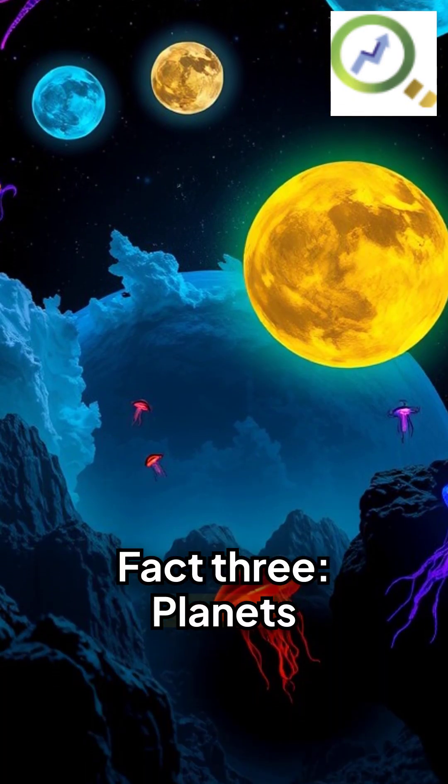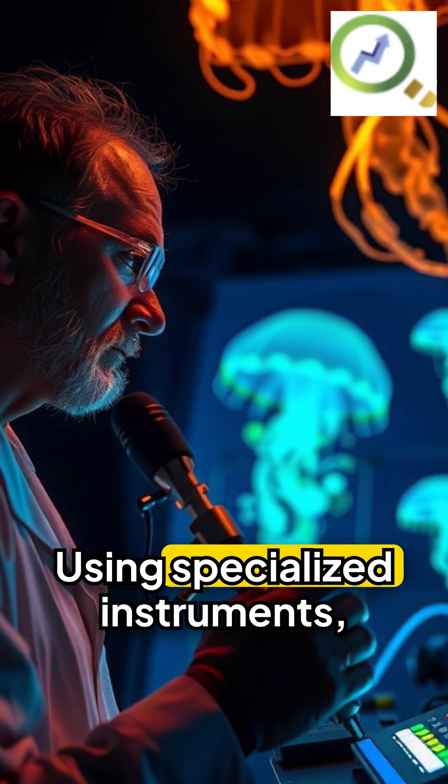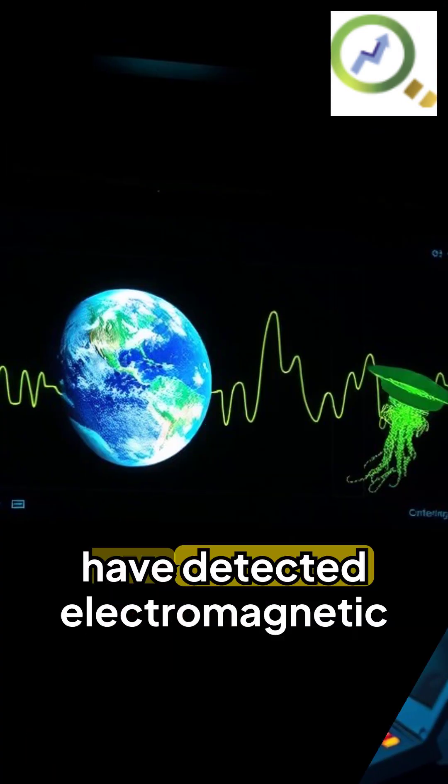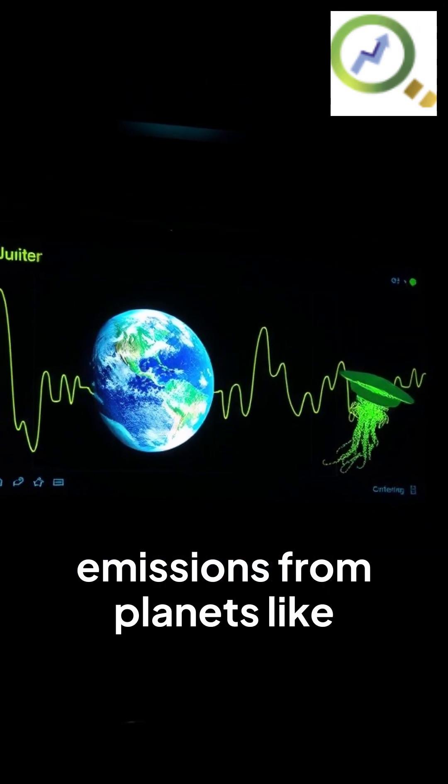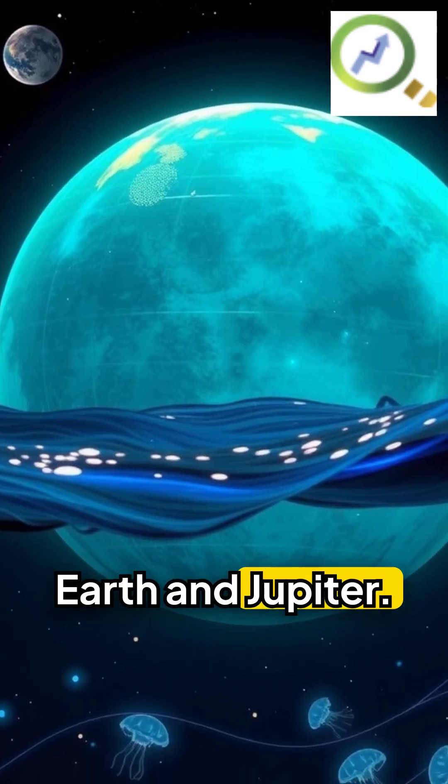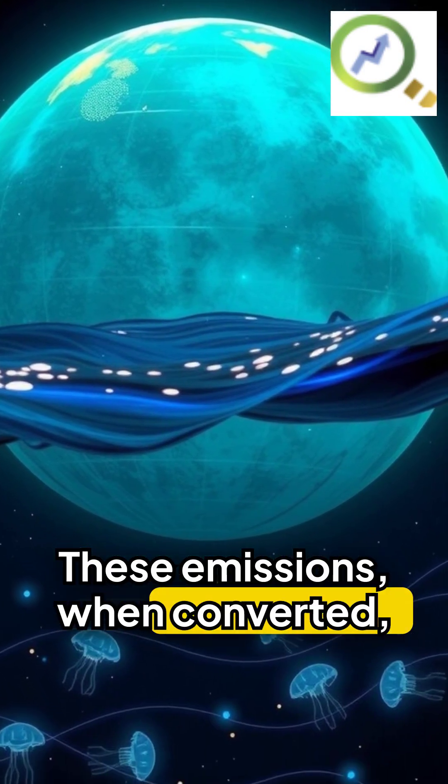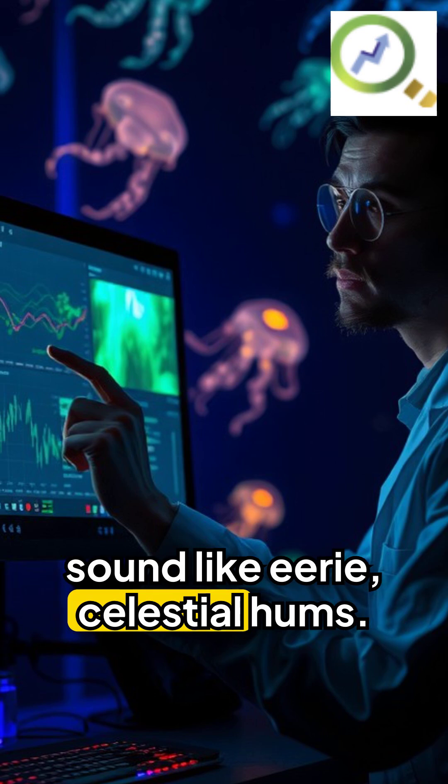Fact three: planets can hum. Using specialized instruments, scientists have detected electromagnetic emissions from planets like Earth and Jupiter. These emissions, when converted, sound like eerie celestial hums.